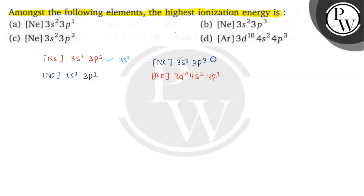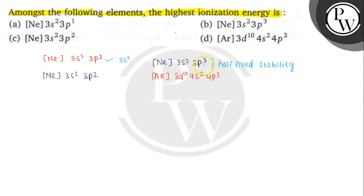Now we have [Ne] 3s² 3p³, which is a half-filled electronic configuration — half-filled stability. If we remove one electron from the 3p orbital, we need more energy. So the ionization energy would be highest in this case because it has half-filled stability.